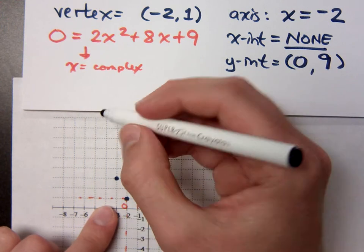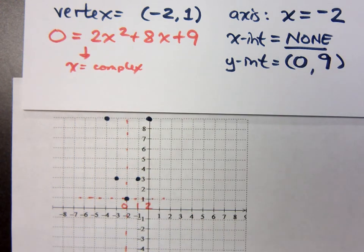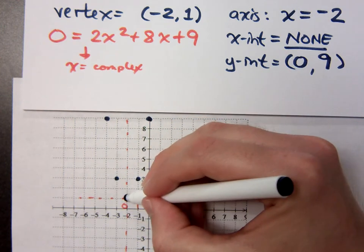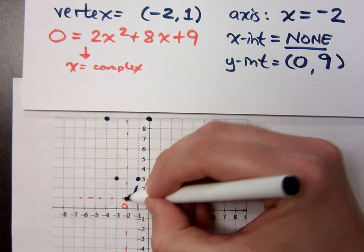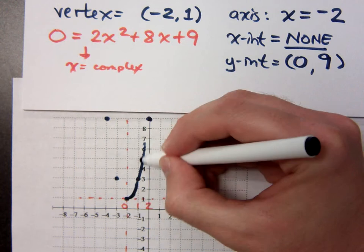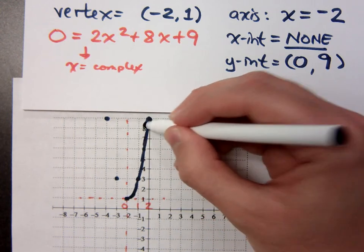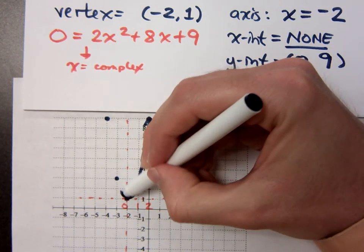And then you just reflect on the other side of your axis of symmetry. So I hope you guys see that it's very clear that we do not have any y-intercepts. Excuse me, x-intercepts.